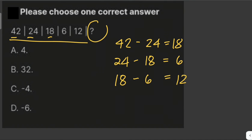We need to find the number next to 12. That would be 6 minus 12, which equals negative 6. So the answer here is letter D.